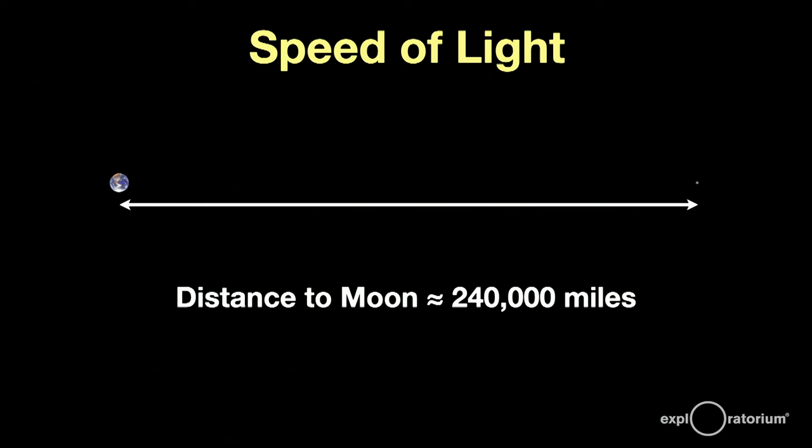It takes light about 1.3 seconds to cover the same distance. Did you get that? Let me do it again. 1.3 seconds. Light takes only eight minutes to cover the distance between the Sun and the Earth.